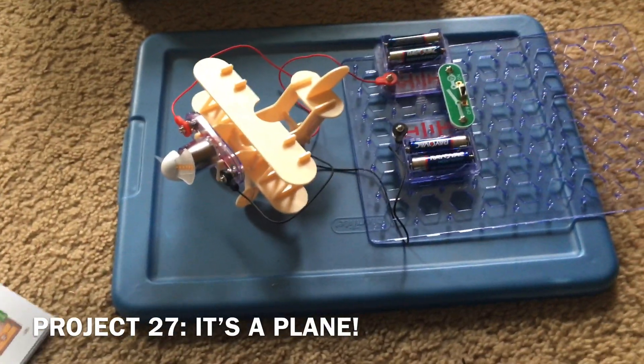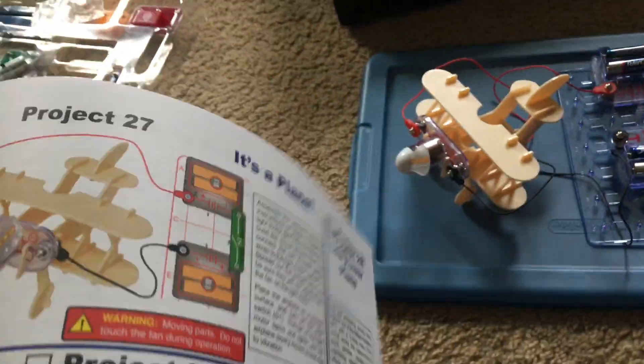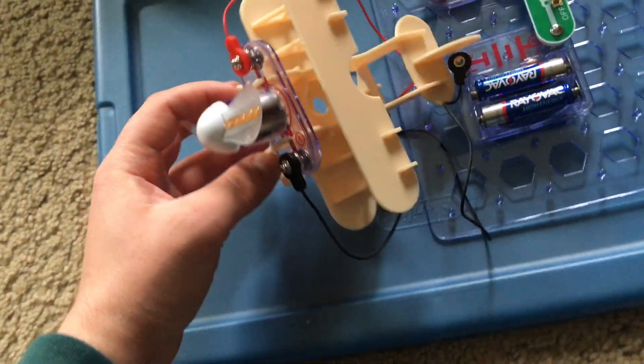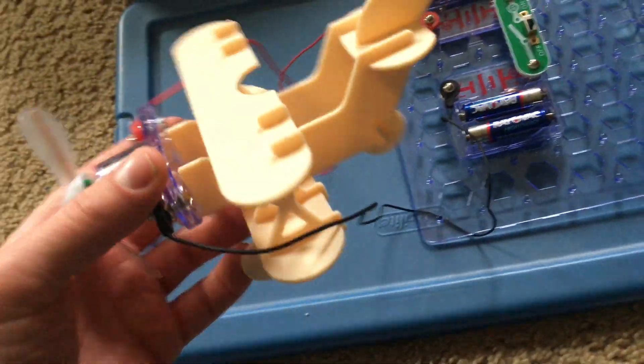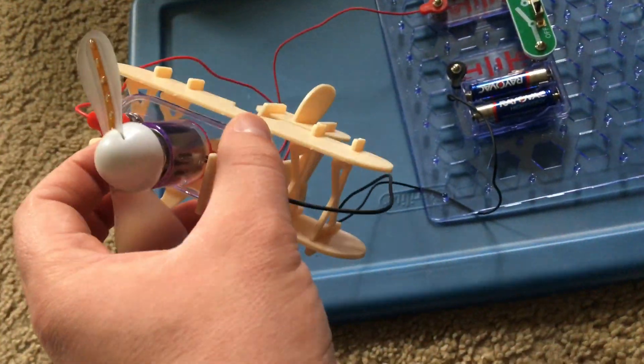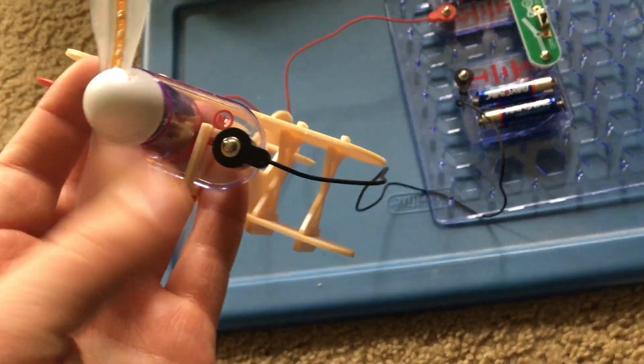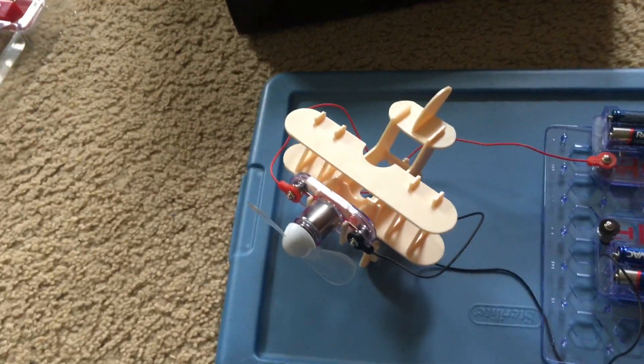Project 27, it's a plane, is very neat. I built the model plane from the plastic pieces that were included in this kit and then I attached the light motor to the front. And you'll see that that will act like a propeller on the plane. The motor will act like the engine.